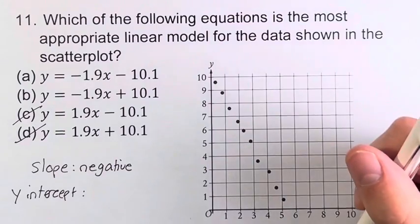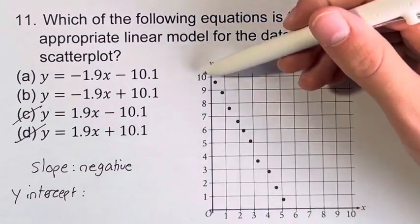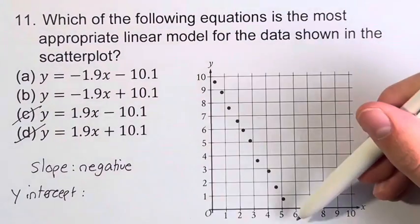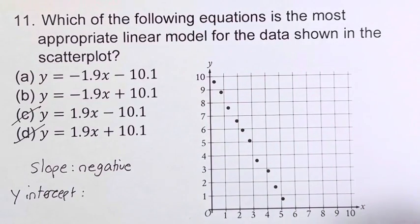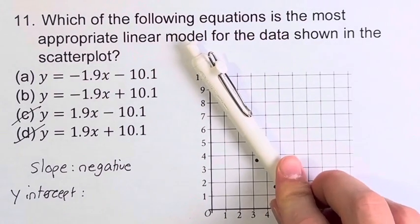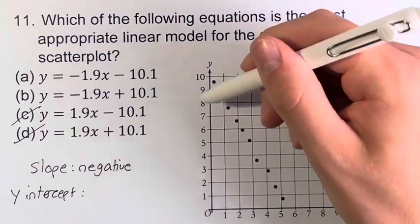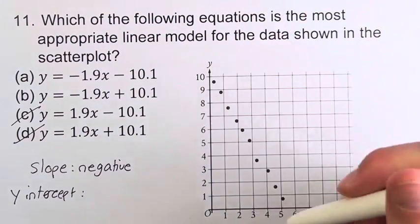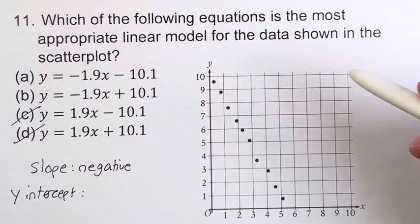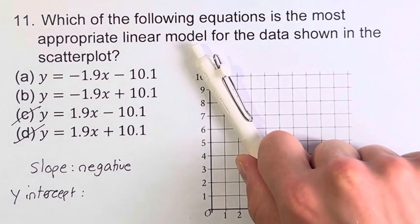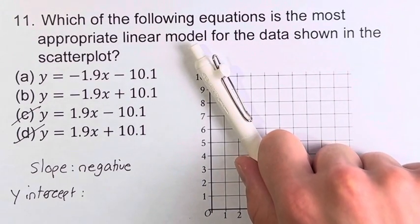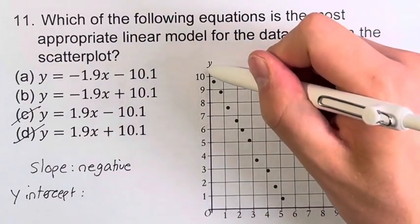Well, the y-intercept is where the line, if we did have a line, the line that best fits this data, where that intercepts the y-axis. So if I use this pen to approximate the line, it would look something like this. You put the line here, it's going to go very close to all these points. It's going to fit them very well. Where does this line intercept the y-axis?